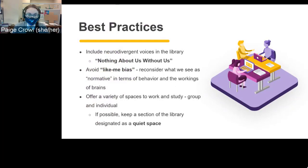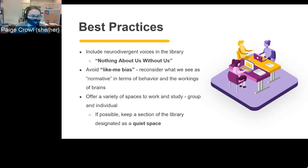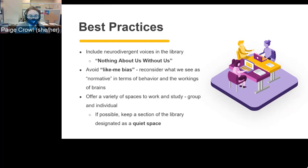With this in mind, let's discuss good practices to make libraries more accessible. Part of this is keeping on top of changing understandings of the world and the needs of the people we serve. The first and most important thing is to include neurodivergent voices in our work — in planning, in research, on teams and committees, in the design of our spaces, and especially in our instruction. 'Nothing about us without us' has been the rallying cry of disability activists since the 1990s and it's still true today.